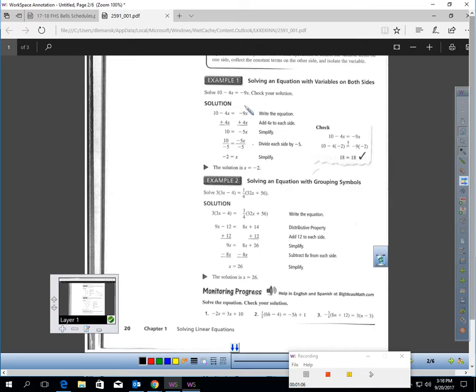We did step one. Step two, get all the variables on one side. If I add 4x to each side, do you notice how I have constants on the left and variable on the right?